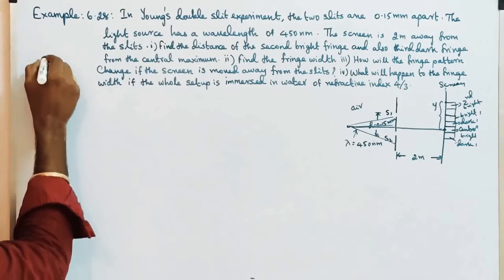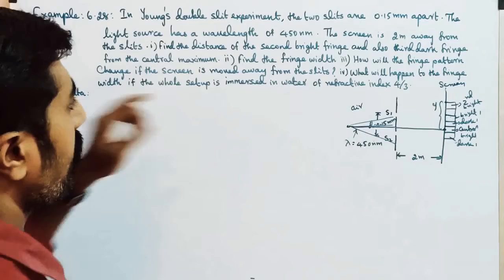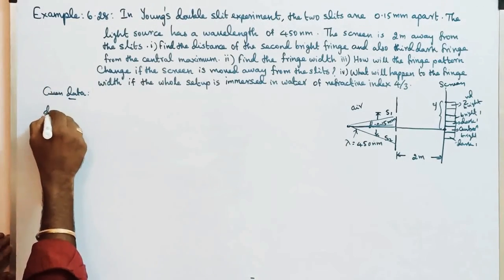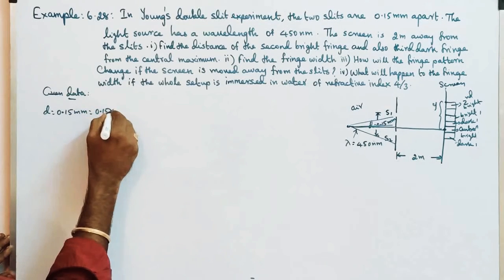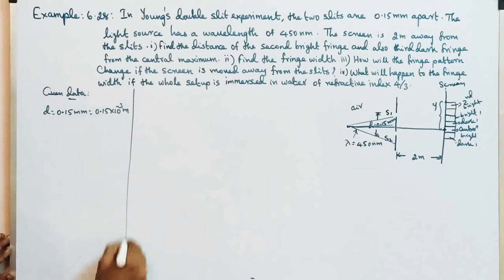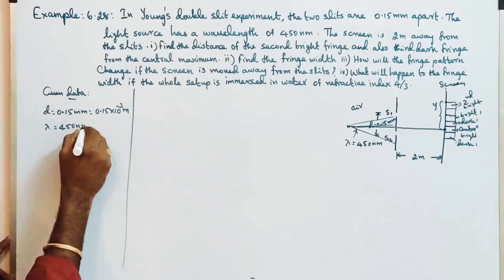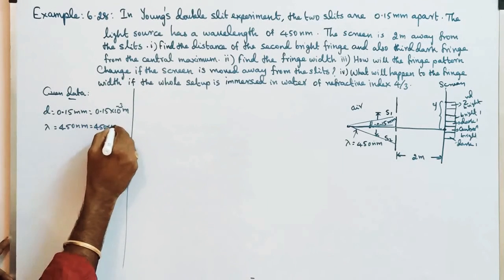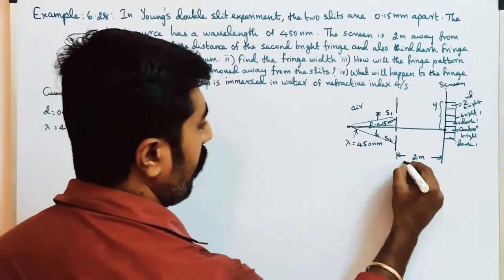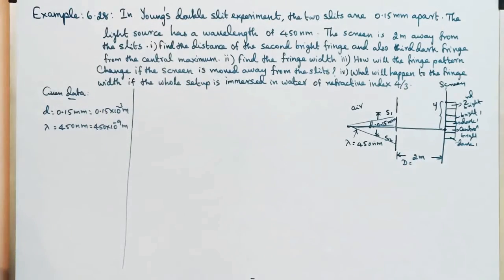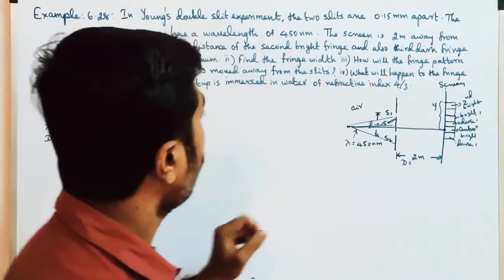Given data: small d is equal to 0.15 mm, which is 0.15 × 10⁻³ meters. Lambda is 450 nanometers, which is 450 × 10⁻⁹ meters. Capital D, the screen to slits distance, is equal to 2 meters.